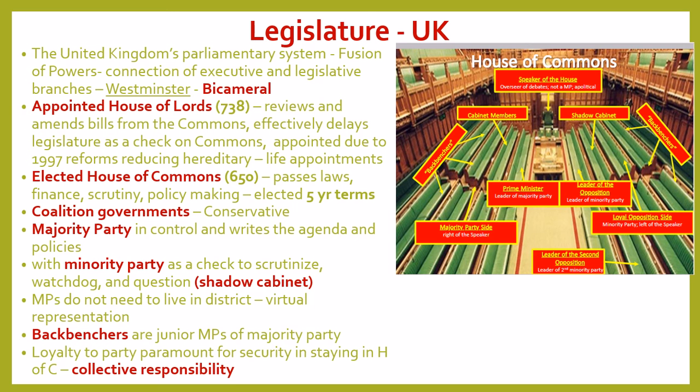Members of the House of Commons are called MPs — elected members of parliament, elected to five-year terms. The House of Commons is generally run by either a majority singular party or a coalition of parties. Right now the Conservatives are the majority party and have enough seats not to need a coalition with another party. But often parties do form an alliance or coalition in order to have a majority, which is necessary to control every aspect of the House of Commons.